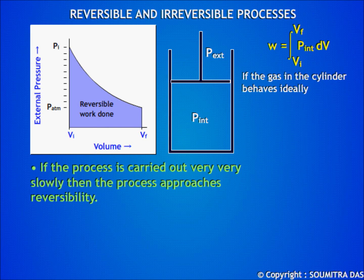If the gas in the cylinder is considered to behave ideally, then the internal pressure equals nRT by V. Putting this value over here, we get work done equal to nRT ln final volume divided by initial volume.